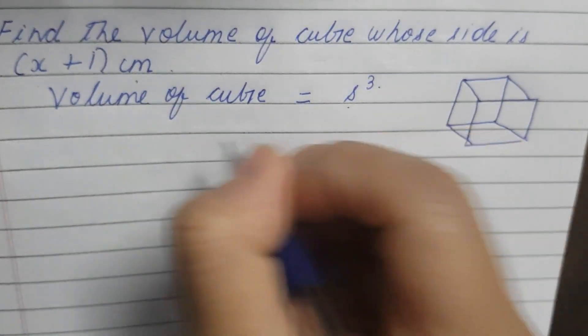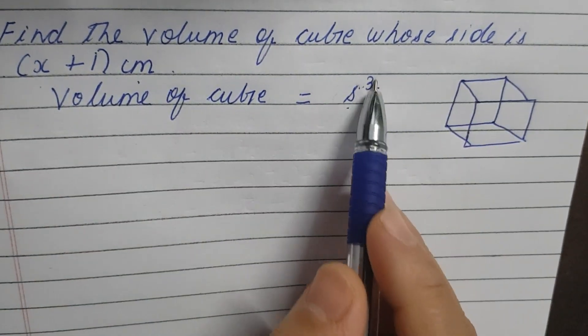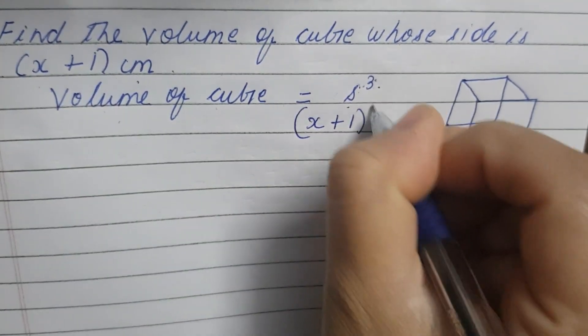So this can be written as, we can get the side. So that is, s³ is the formula. x plus 1 to the whole cube.